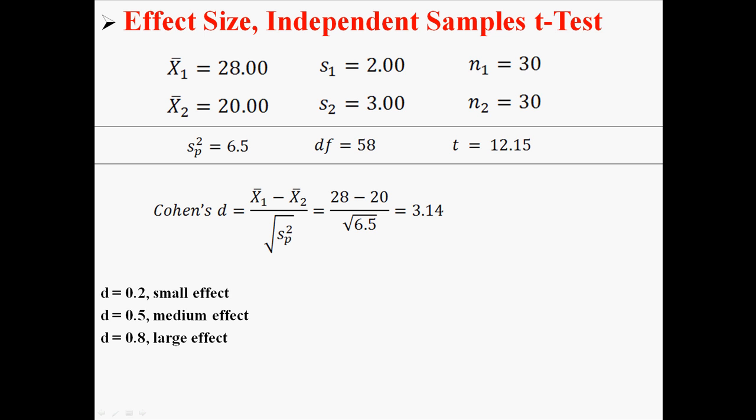In this case, 3.14 is much larger than 0.8, so that indicates that we have a very large effect. Our means are likely to be very different from one another. Instead of just being a little bit different, they're probably very far apart.